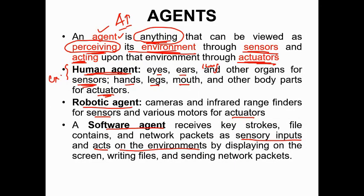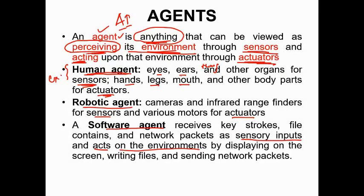We humans are also agents. We have sensors — eye, ear, nose, mouth — all these are our sensors. And actuators are our hands, legs, and mouth. We do something using our hands and legs.